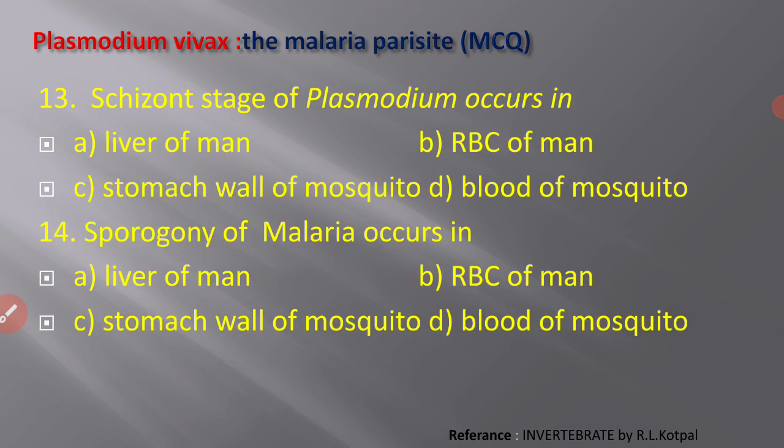Next MCQ: schizont stage of Plasmodium occurs in? Options: A) liver of man, B) RBC of man, C) stomach wall of mosquito, D) blood of mosquito. The schizont stage of Plasmodium occurs in the RBC of man. Various stages of Plasmodium vivax are found in the RBC, one of which is called the schizont.